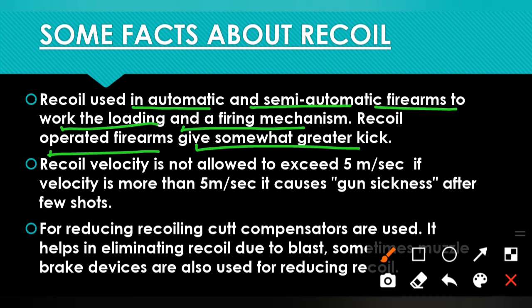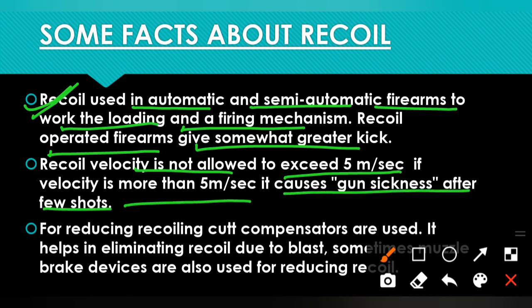In some cases, recoil-operated firearms have comparatively higher recoil than normal, which is why the injury-causing factor increases. Your recoil velocity is not allowed to exceed 5 meters per second. If the velocity is more than 5 meters per second, it causes gun sickness after a few shots. So your maximum recoil velocity should be 5 meters per second — this is a very important point from an exam perspective.